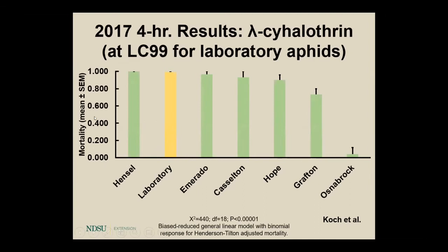I'll show you the four-hour results, as they tell a pretty good story. Mortality is on the Y axis, with 1.0 being 100%. The yellow bar is our laboratory colony — years old, not exposed to chemicals. Looking at lambda-cyhalothrin: Hensel, North Dakota, showed near 100% control, closely matching the laboratory. But in Grafton, you're seeing failure beginning — about 75–80% control. And in Osnabrock, control was under 10% at that four-hour mark.